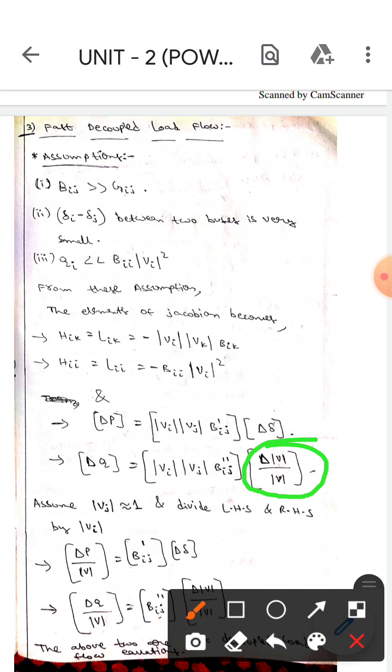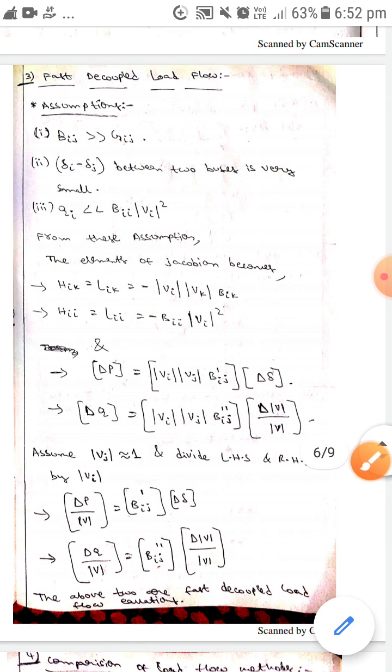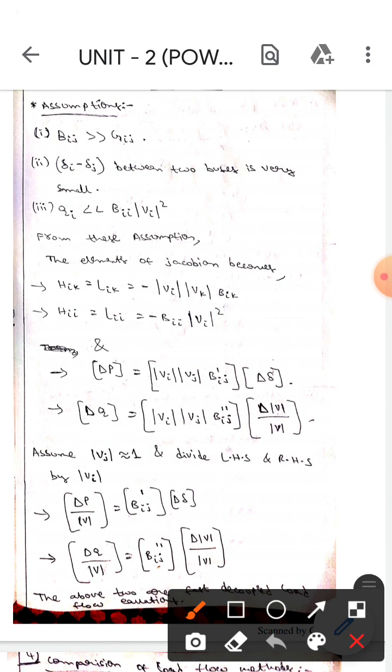we will put Vj equals to 1, and also we will develop the LHS and RHS with modulus of Vi. We will divide these two equations with modulus of Vi like that.